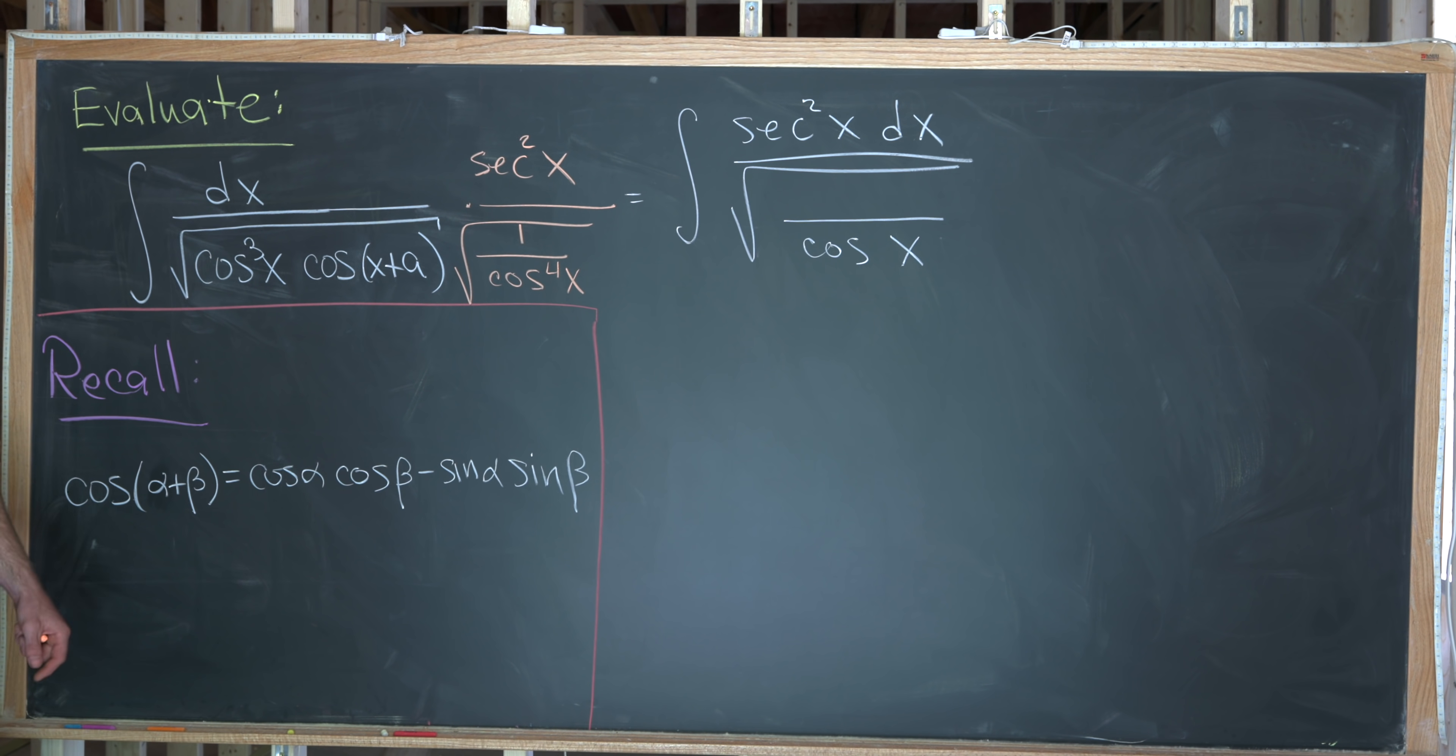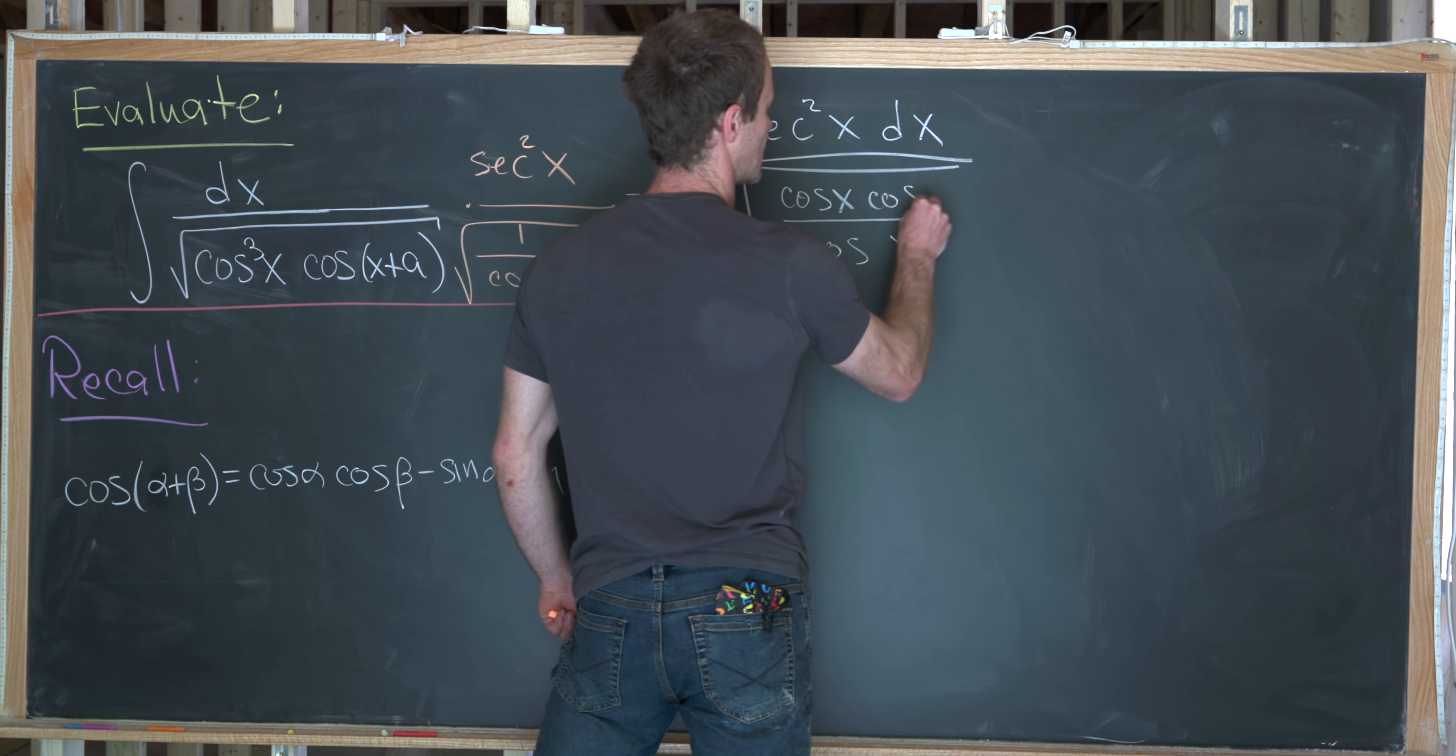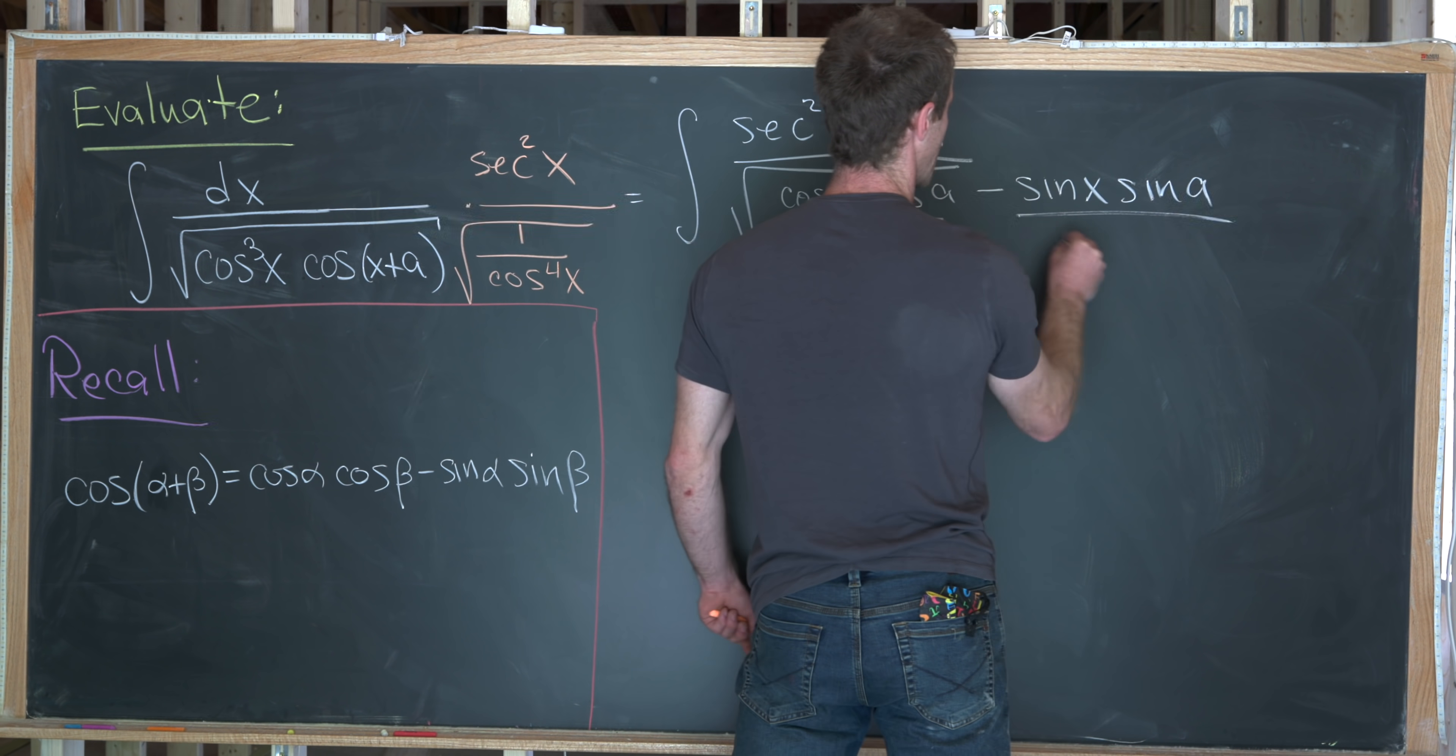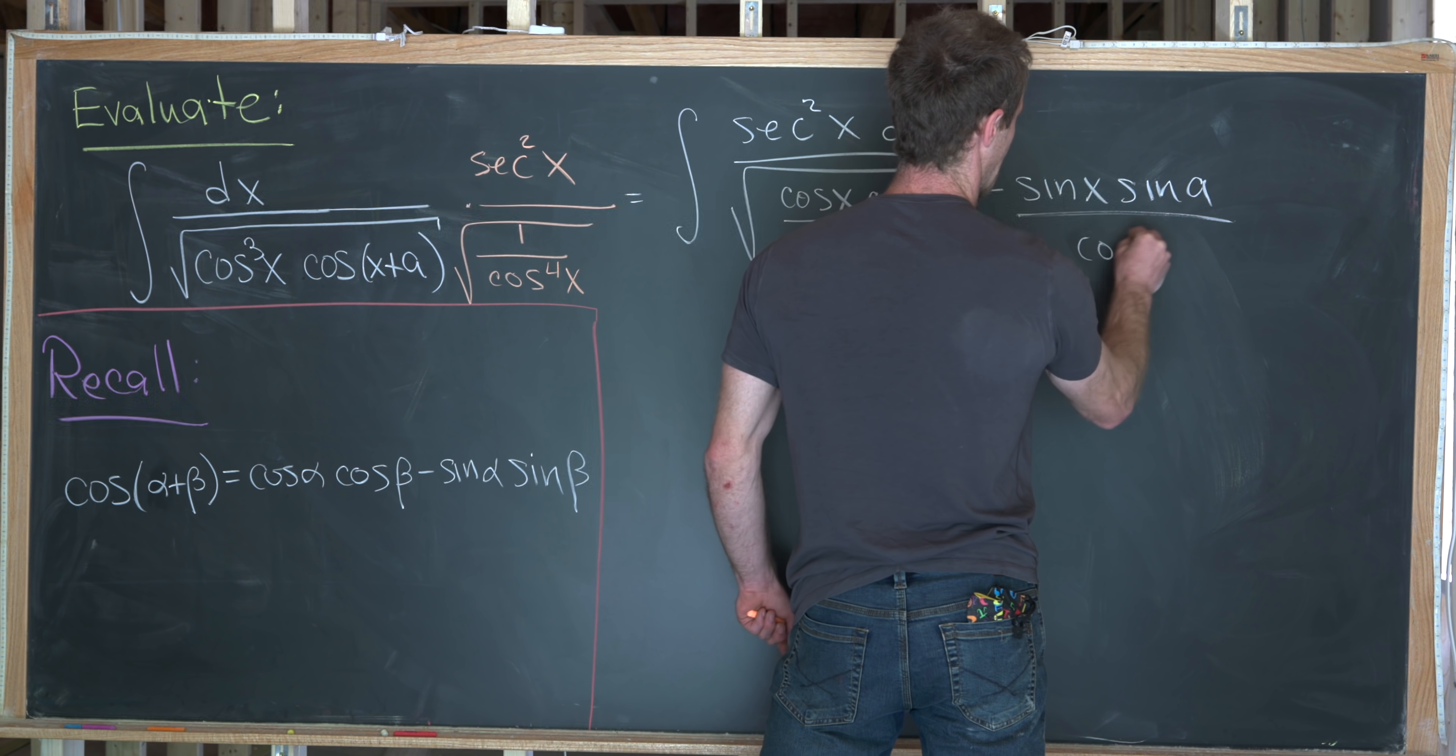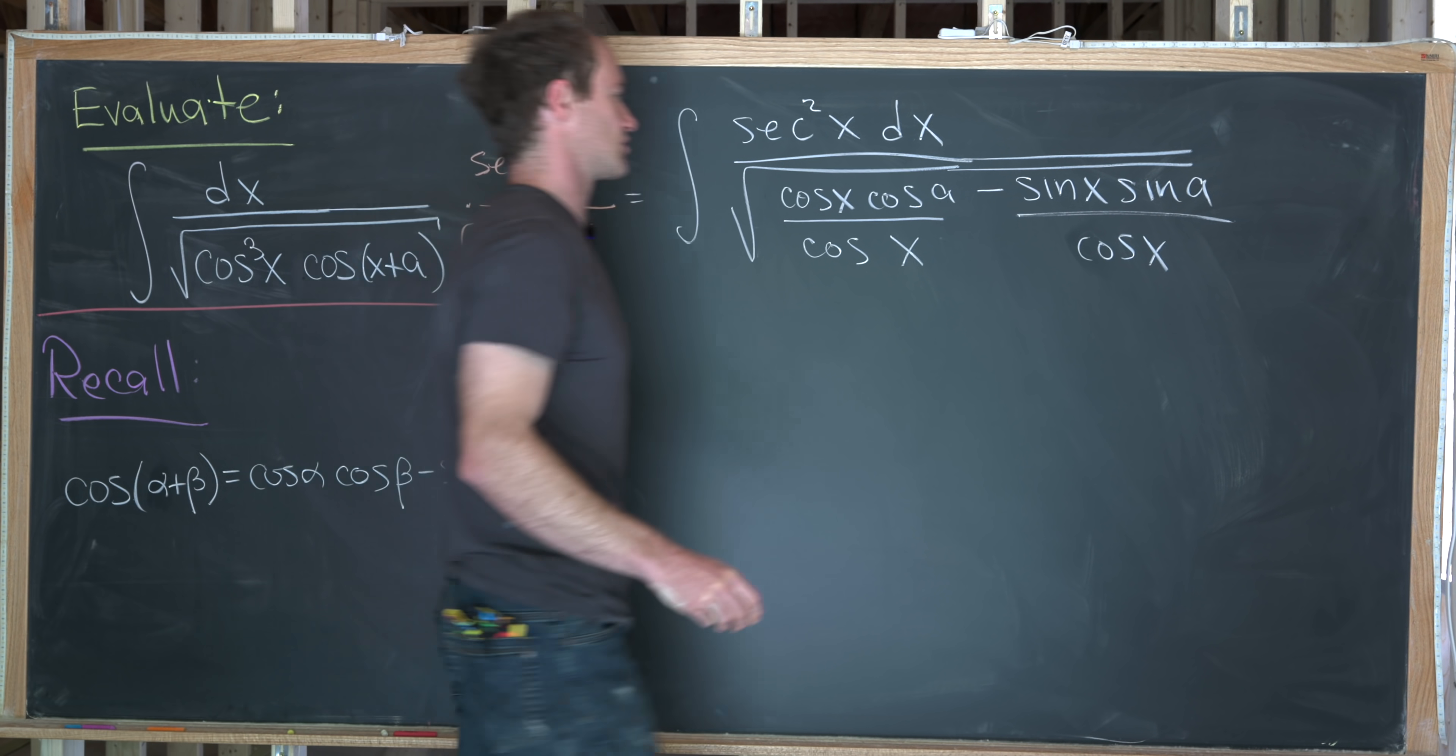So a single cosine in the denominator. And then I've got this cosine of x plus a in the numerator. Let's take this cosine of x plus a and pull it apart using the sum angle formula for cosine. That's going to give us cosine of x cosine of a minus sine of x sine of a. And I'll go ahead and split that into two fractions while I'm at it.